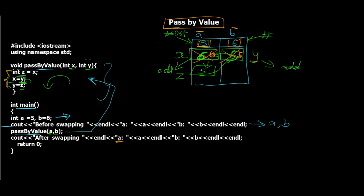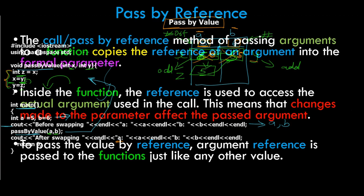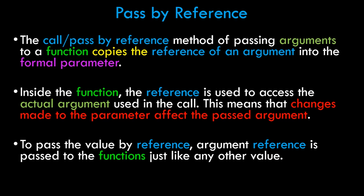Now let's move on to pass by reference. The call or pass by reference method copies the reference of an argument into the formal parameters. Inside the function, the reference is used to access the actual arguments, meaning changes made to the parameter do affect the passed arguments. Since the theory is a bit abstract, let's move to the programming part and also see the behind-the-scenes representation.